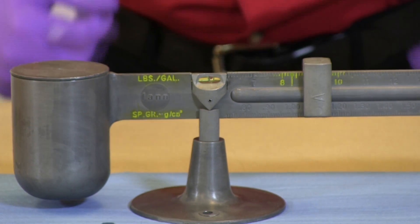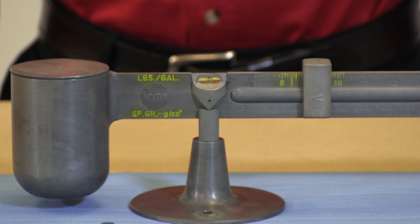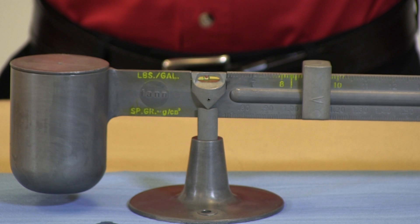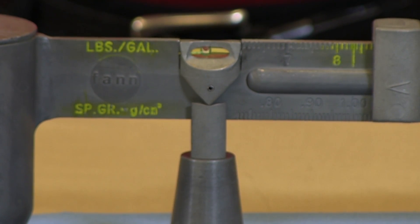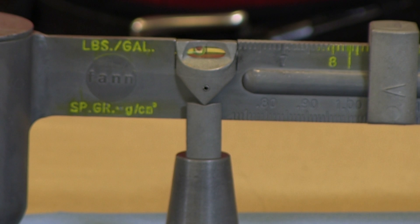The top scale on the front is in pounds per gallon, and the bottom scale is specific gravity. These two are the most commonly used in the drilling industry.